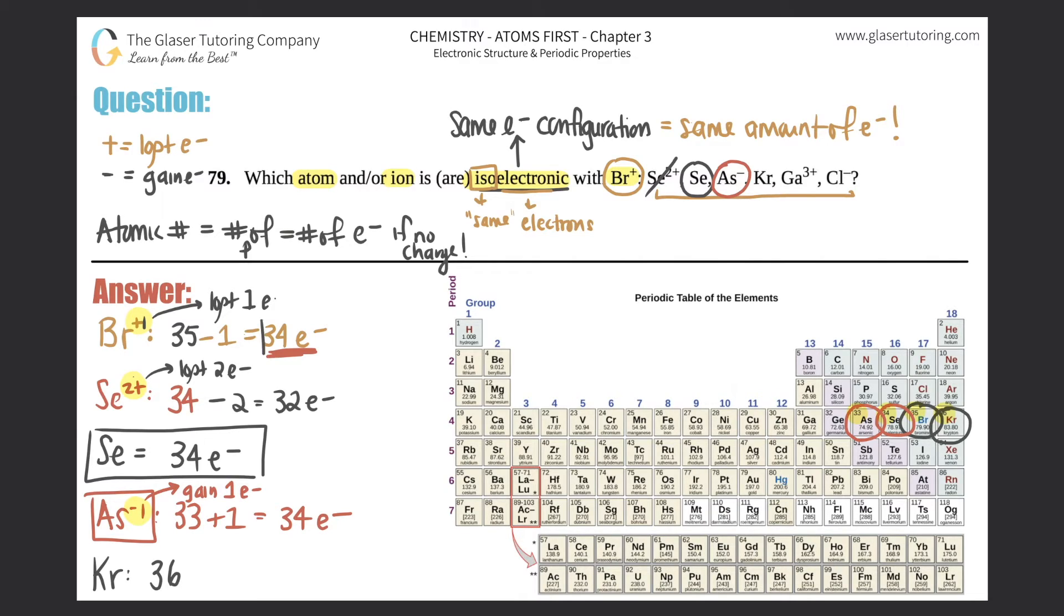Now let's move to Ga, gallium. Ga3+—gallium is over here. The atomic number of gallium is 31. 3+ means that we lost three electrons, so 31 minus 3 is 28 electrons, and that's not 34, so that's out.